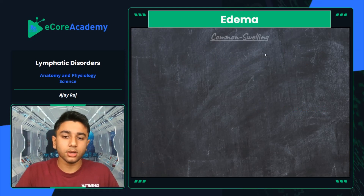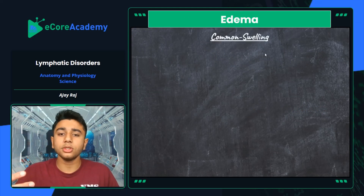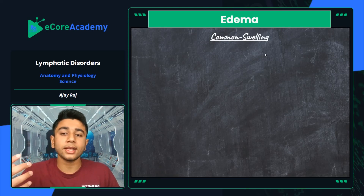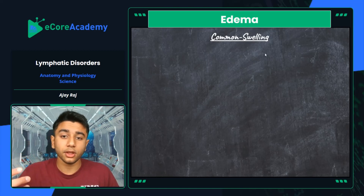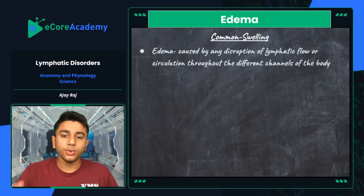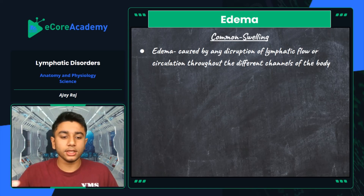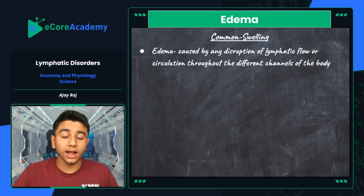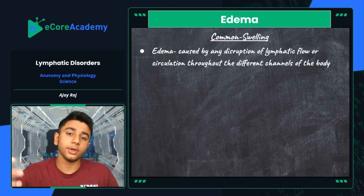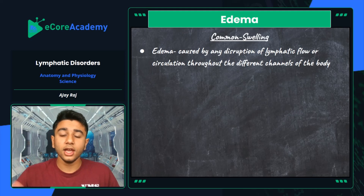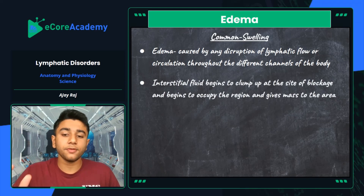Edema, also known as common swelling, occurs whenever you hit a part of your body hard or have some sort of lymphatic obstruction causing severe or minor swelling. Edema is caused by any disruption of lymphatic flow or circulation throughout the body's channels. This can happen organically — for example, if you get sick and lymph nodes or lymphatic vessels clog up and cause an obstruction, producing significant swelling in that area.